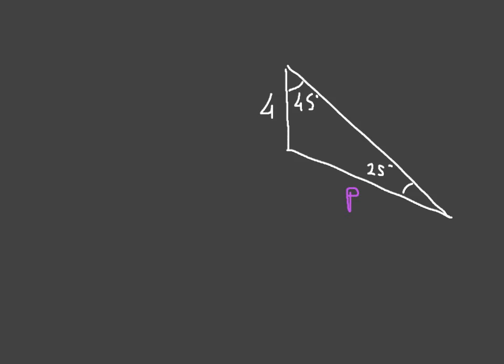So, once again, the first step when you're given a triangle like this is to see if we can use the sine rule. It's very important to think in terms of side lengths and their opposite angles. Looking at this triangle, we can see that we're given the side length 4 and its opposite angle 25 — these two bits of information go together. Think: side length, opposite angle. On top of that, we're looking for the side length P, and to use the sine rule we need its opposite angle, which we have — we're told it's 45. So we have a side length and its opposite angle, and we have the angle opposite the side length we're looking for.